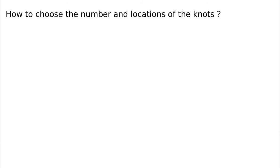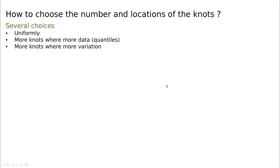So a new question is how to choose the number and location of the knots. We have a lot of information. The flexibility comes actually from the knots. So we have several choices. There's the obvious one, which is using uniformly distributed knots. Like, I don't know, every 10 points, we locate a knot. And the other idea would be to use more knots when we have more data.